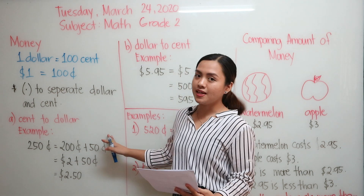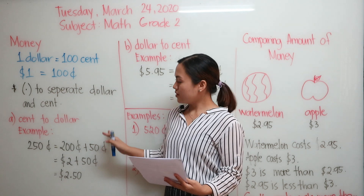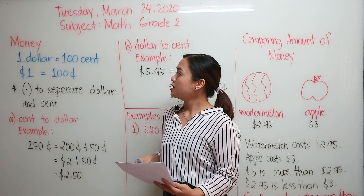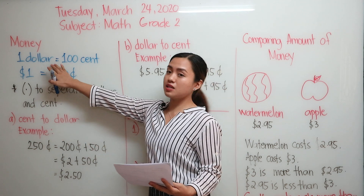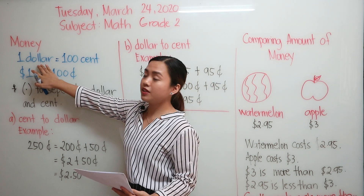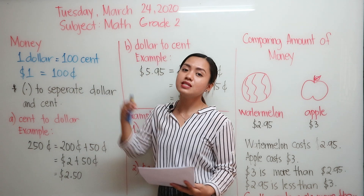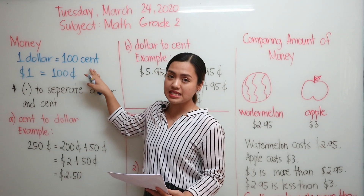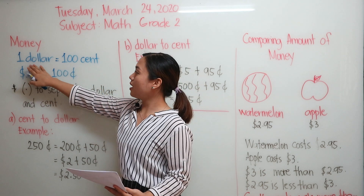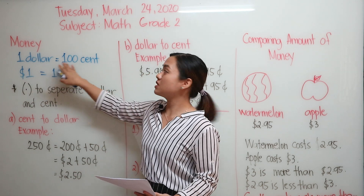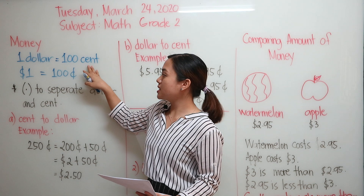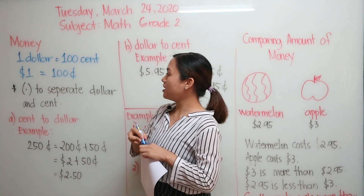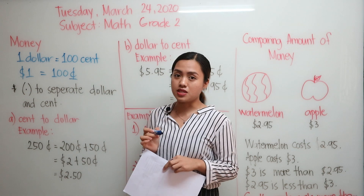Now we have here money. I know that you all know this one but let's try to go over it first. We have dollar and cent. We said before that dollar is greater than cent. Now we have here one dollar is the same as 100 cents. And the sign for dollar is this one, and the sign for cent is this.